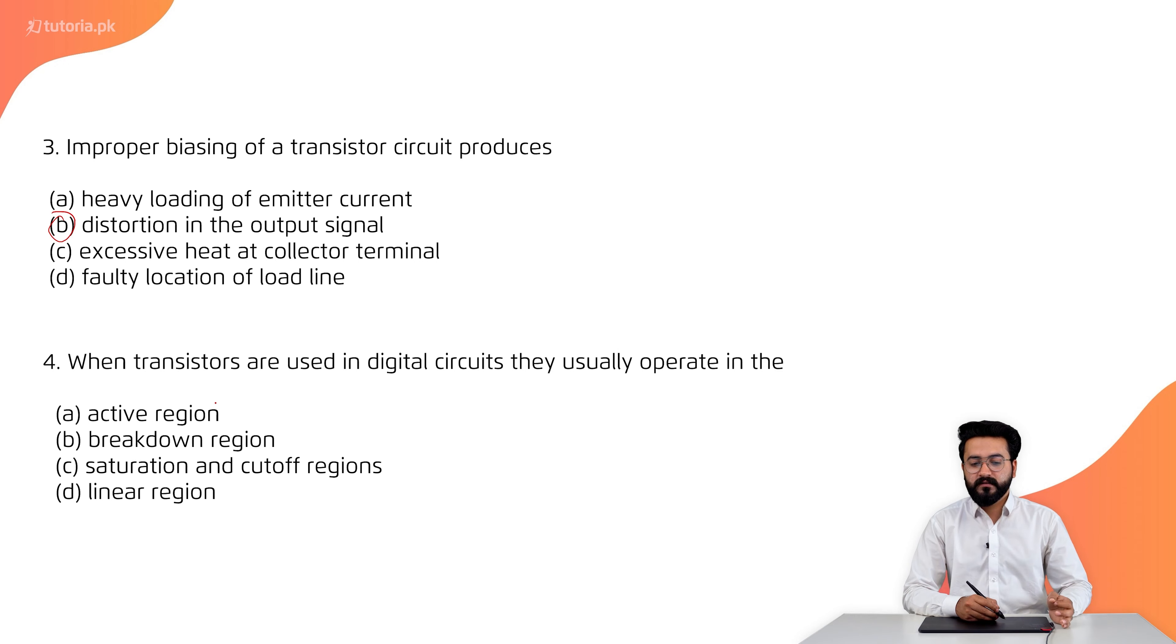Number 4 is, when transistors are used in digital circuits, they usually operate in the region. The correct option is C, saturation and cutoff regions.